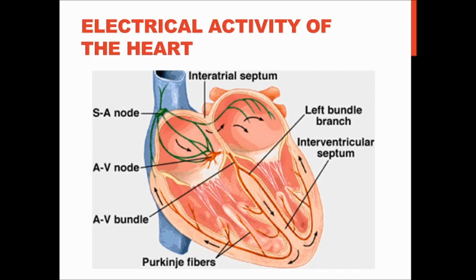Let's talk about the electrical activity of the heart. There are different electrical structures: the SA node (sinoatrial node), the AV node (atrioventricular node), the AV bundle, bundle branches, and Purkinje fibers. Electricity flows in that order — from the SA node to the AV node, to the AV bundle, to the bundle branches, to the Purkinje fibers. This flow of electricity between these nodes and nerve fibers is what creates a heartbeat.